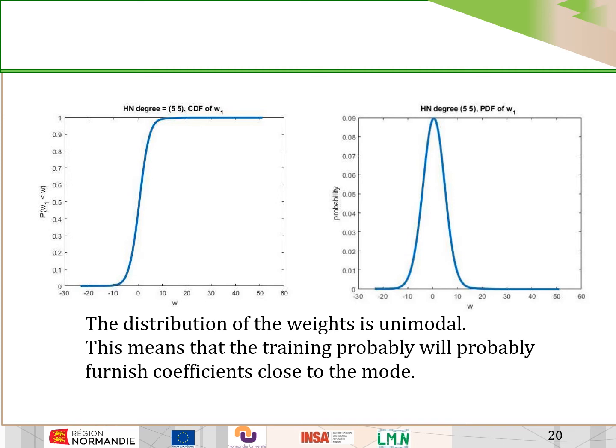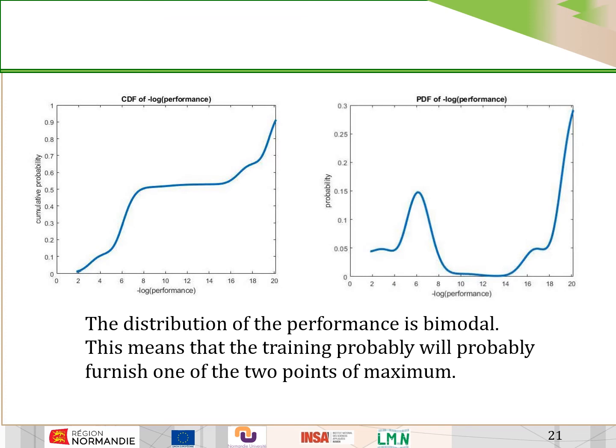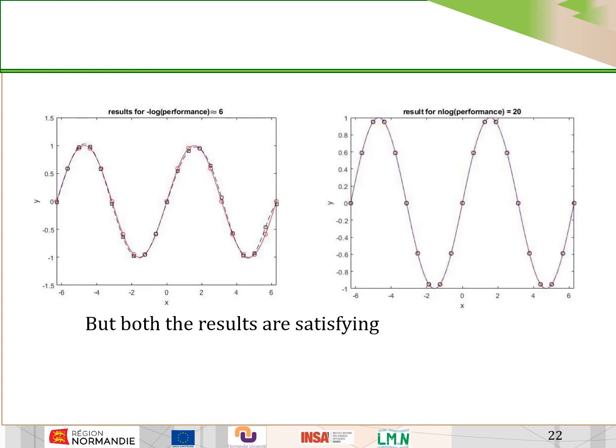In this case, the distribution of the weights becomes unimodal. This means we will probably always get the same answer. The distribution of the performance appears bimodal, meaning that training will furnish one of a few points of maximum probability. They are very different from each other — one is much more accurate than the other. Looking at results for both, both are satisfactory, but one is much better.